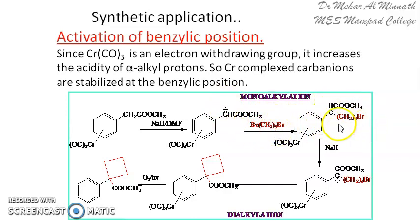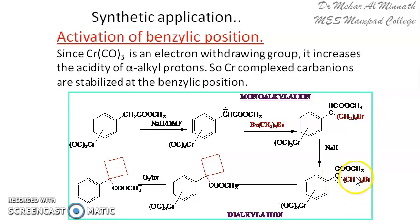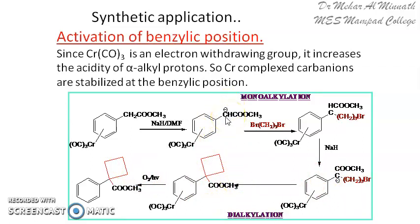Using a base, this proton can be removed and the compound alkylated using an alkyl halide to give the alkylated product. There is one more proton which is also acidic, so that can also be removed and another alkylation carried out. In this case the alkyl group is long enough to undergo intramolecular cyclization, giving a four-membered ring attached to the compound.